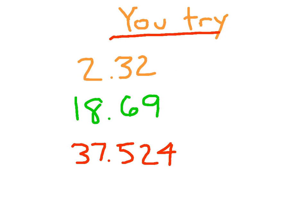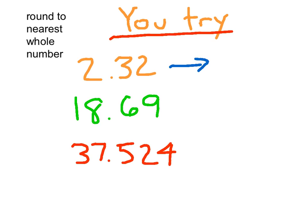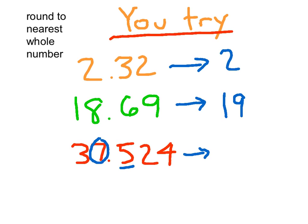Here are three problems for you to try. Please go ahead and write them down — you're rounding to the nearest whole number. Did you get 2 for the first one? The nearest whole number for 18 and 69 hundredths would be 19. I gave you a thousandths place number for the last one, and hopefully you didn't get confused. The nearest whole number is 37.